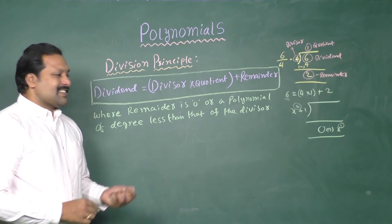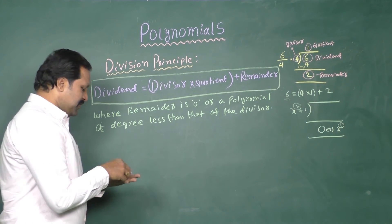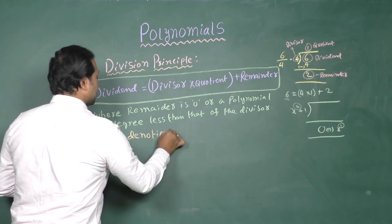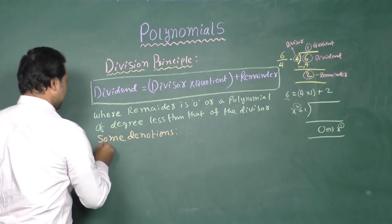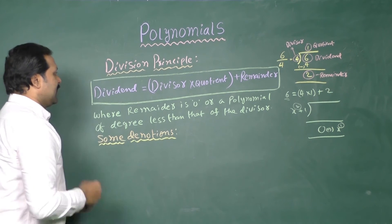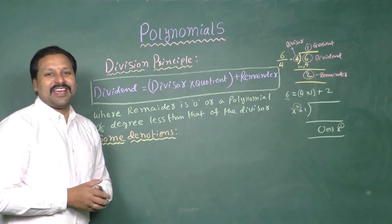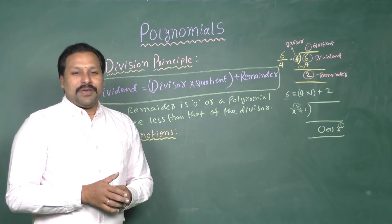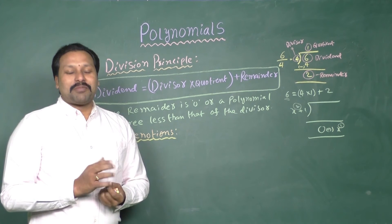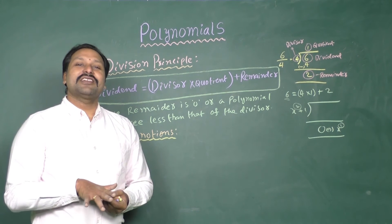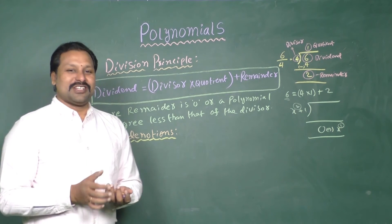Let us discuss some notations here. The dividend is denoted by capital P of x or capital F of x. Otherwise, small p of x or small f of x and so on.